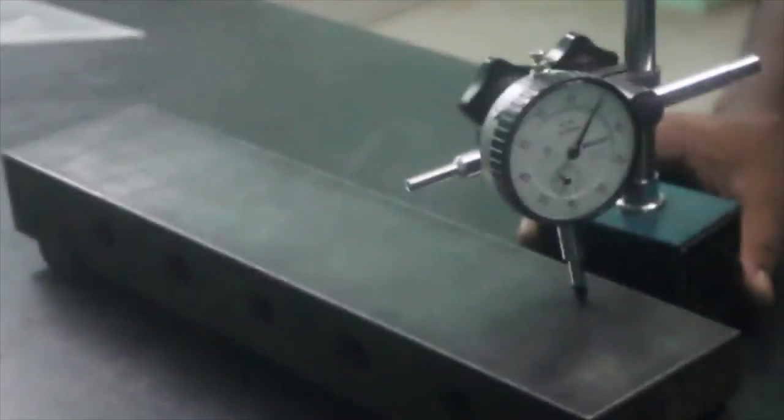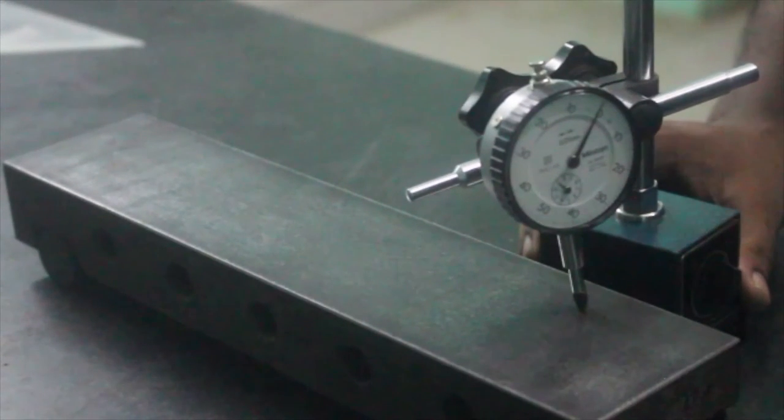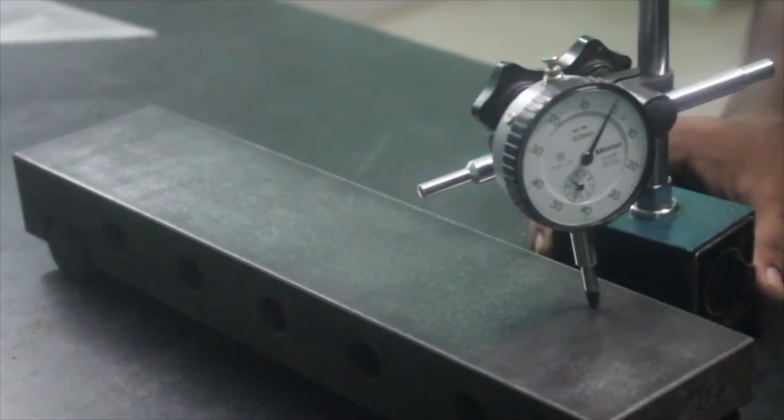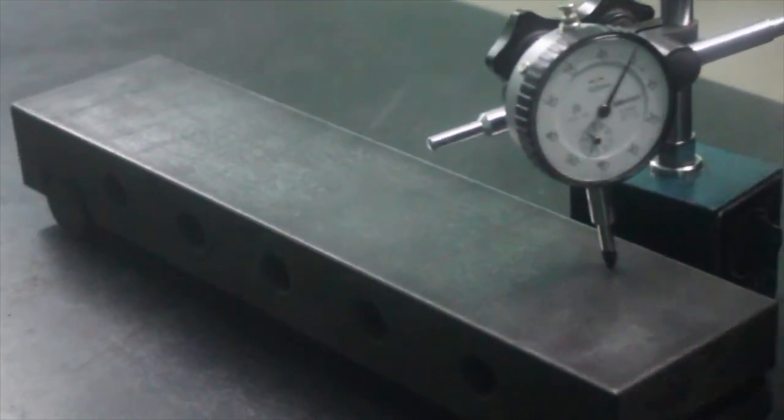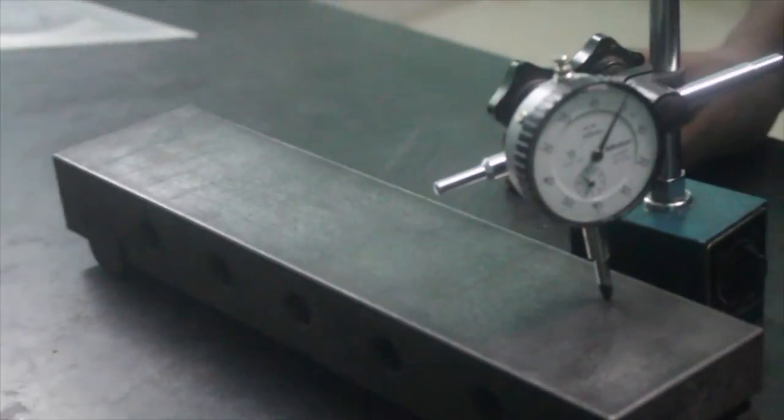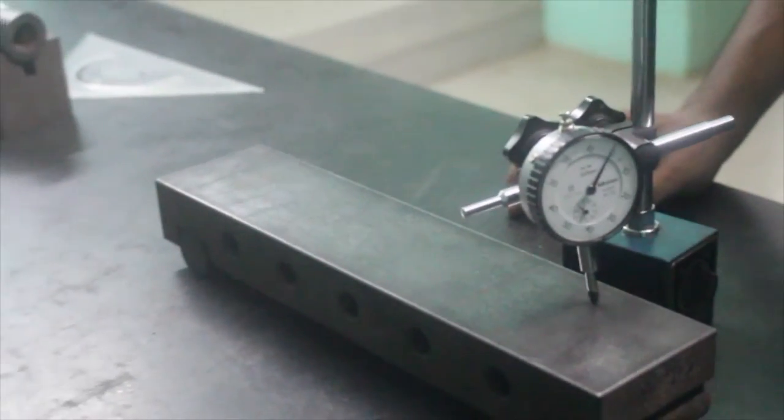We have five values. The minimum value is negative 0.02, and the maximum value is zero. The difference of them is taken: zero minus negative 0.02 to get 0.02.